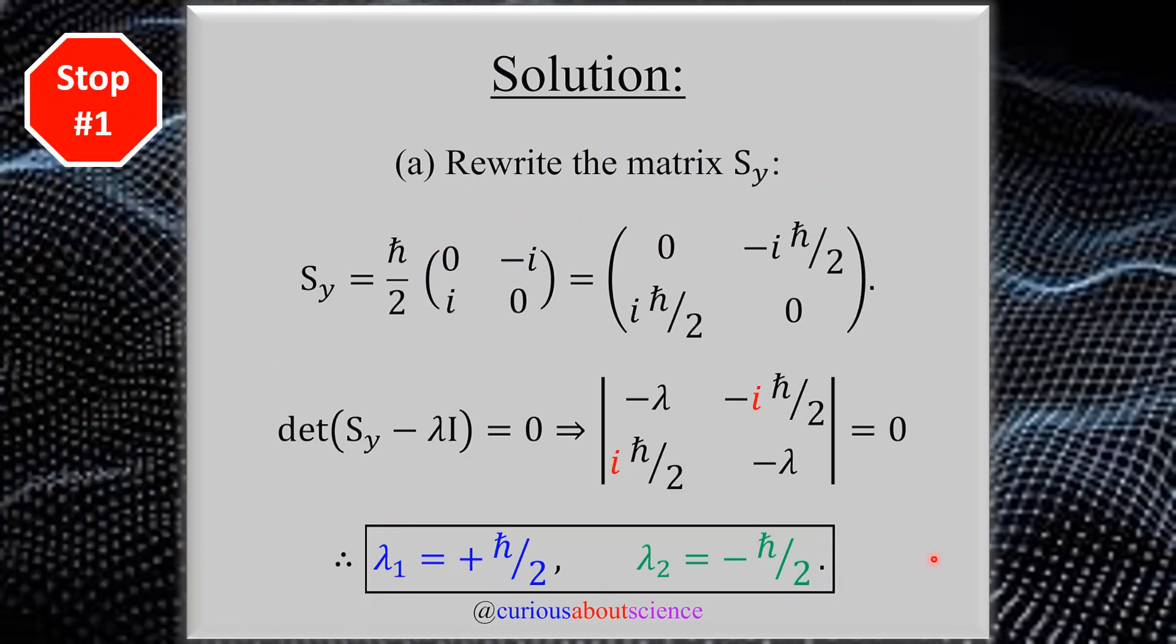So stop number one: if we want to find what these eigenvalues are, we need to use the characteristic equation. If you've been through a linear algebra class, this is nothing new. However, we need to write the S_y matrix not in terms of a factored form here, but in terms of a square matrix that we can then take the determinant of. So go ahead and distribute the h-bar over 2 into the matrix.